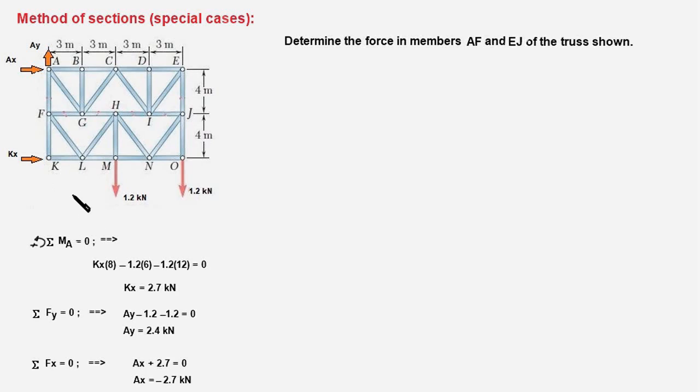The free body diagram of the truss will look like this. Two forces AX and AY would replace the pin support at point A and a single horizontal force KX would replace the roller support at point K, and our task is to first determine these three forces.